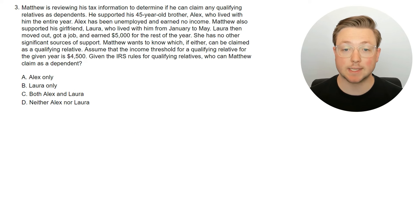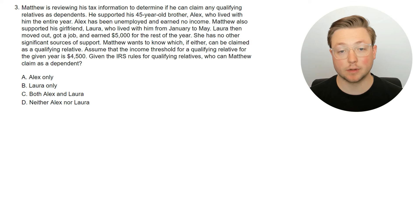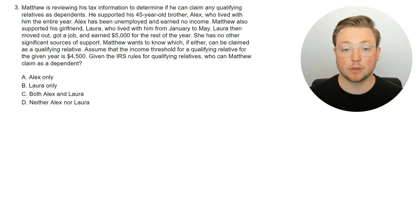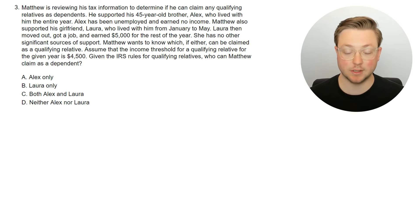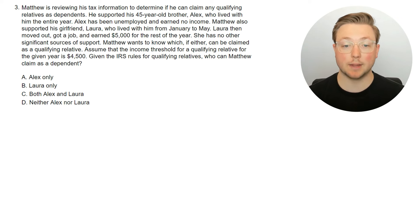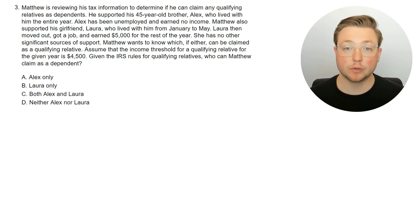Here's question three. Matthew is reviewing his tax information to determine if he can claim any qualifying relatives as dependents. He supports his 45-year-old brother Alex, who lived with him the entire year — Alex has been unemployed and earned no income. Matthew also supported his girlfriend Laura, who lived with him from January to May, then moved out, got a job, and earned $5,000 for the rest of the year. She has no other significant sources of support. Assume that the income threshold for a qualifying relative for the given year is $4,500. Given the IRS rules for qualifying relatives, who can Matthew claim as a dependent? We don't know the rules here, so let's go ahead and look at the answer.